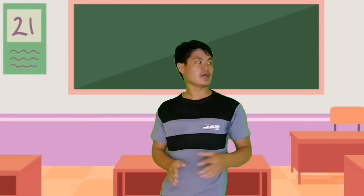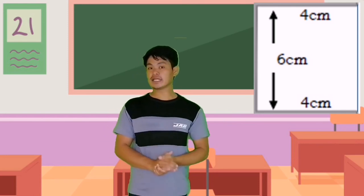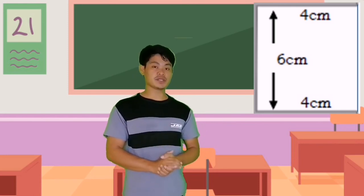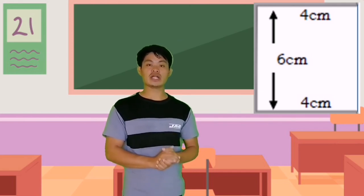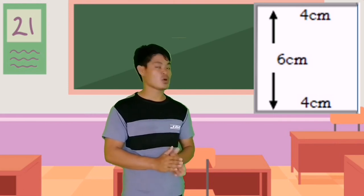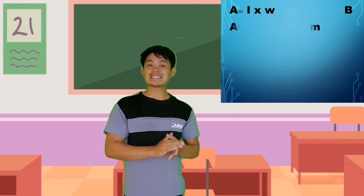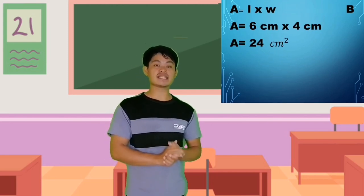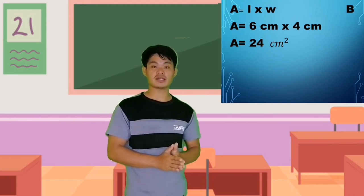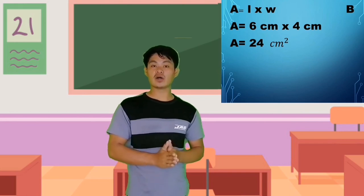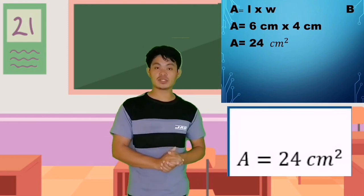Step 2: Area of rectangle B. The length of rectangle B is 6 cm and the width is 4 cm. So area equals 6 cm times 4 cm, which equals 24 cm squared. The area of rectangle B is 24 cm squared.